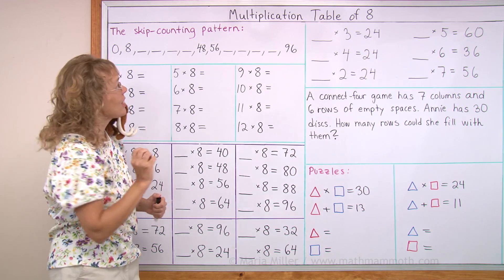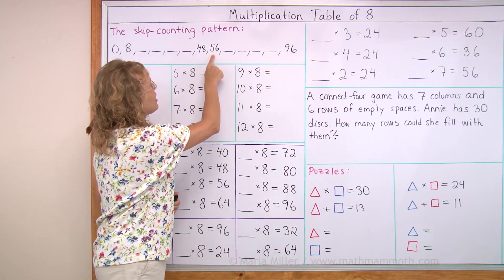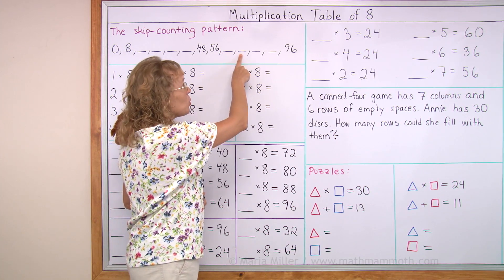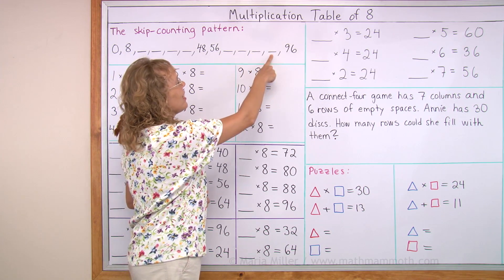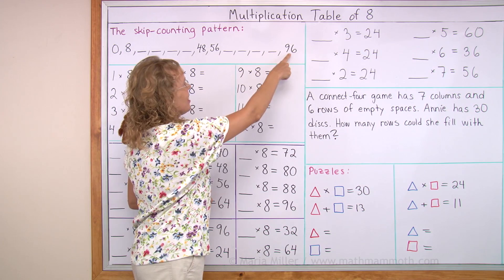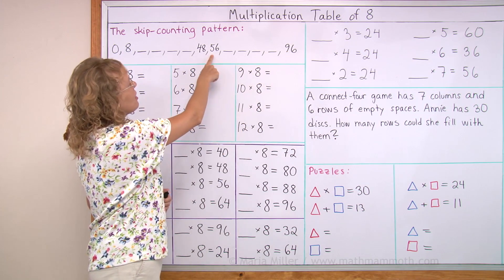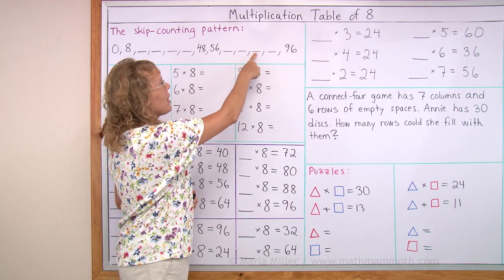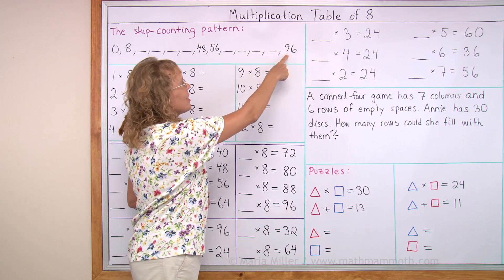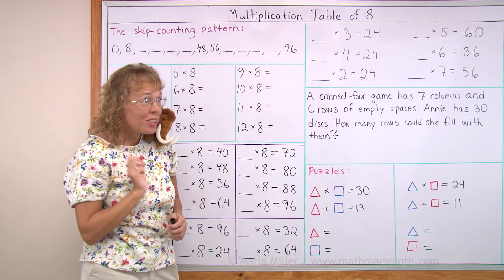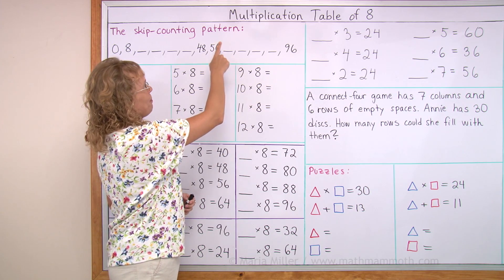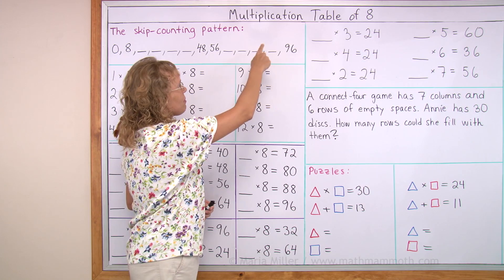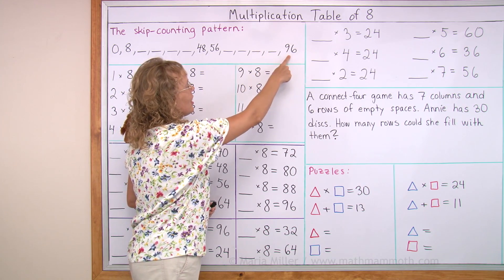And then the latter half, starting with 56: 56, 64, 72, 80, 88, and 96. Again: 56, 64, 72, 80, 88, 96. Now it's your turn: 56 ... and 96.